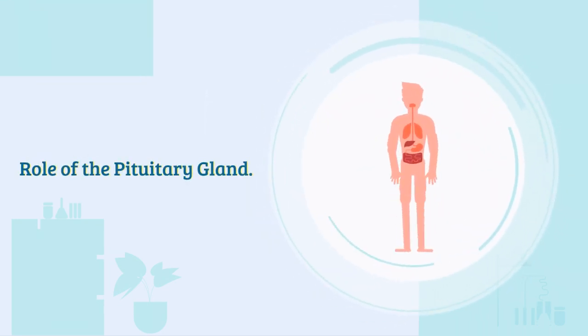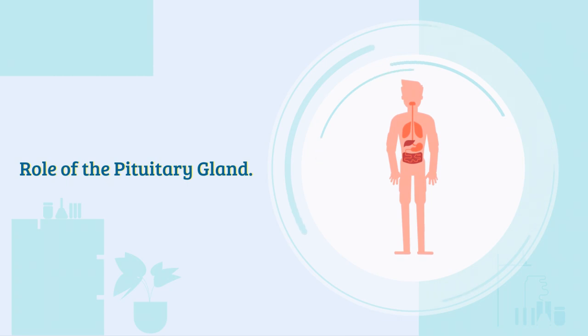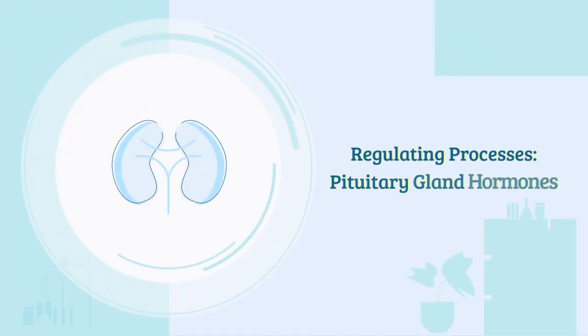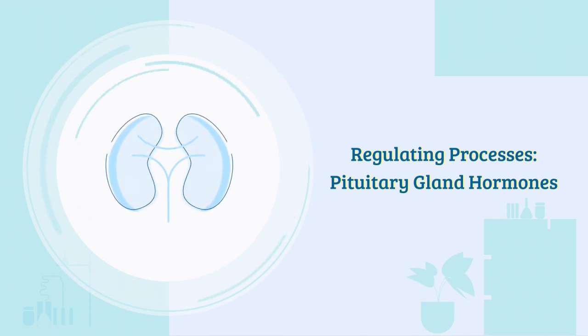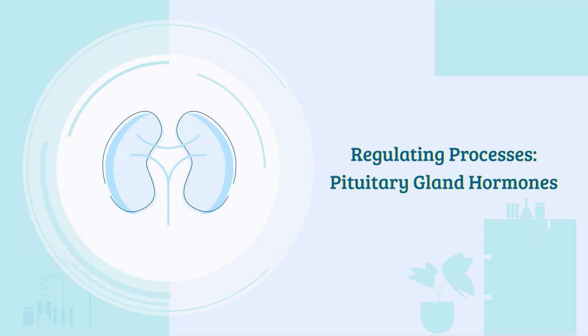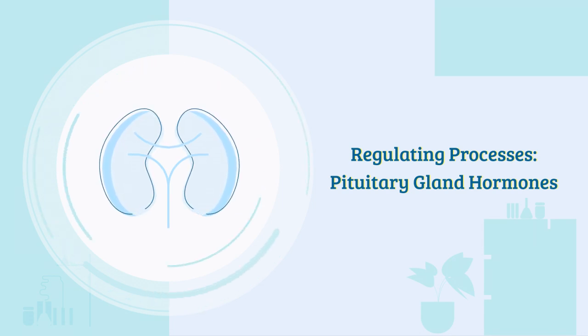Function: the pituitary gland plays a crucial role in regulating various bodily functions through the hormones it produces. These hormones regulate a wide range of processes, including growth, blood pressure, energy balance, sex organ functions, thyroid gland activity, metabolism, aspects of pregnancy, childbirth, and breastfeeding.